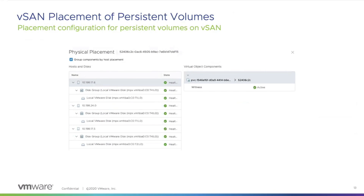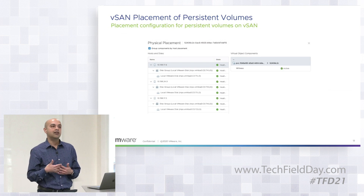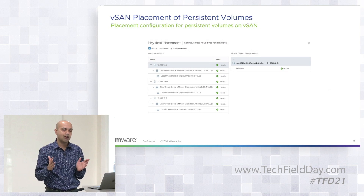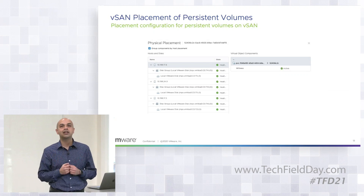Going further, if you want to see where a particular persistent volume is placed on the storage platform like vSAN, we will even show you the actual breakup of the different components and where the witness lies. You can get down to the level of the individual disk on your infrastructure to see if there is any problem with a particular component, which disk is causing problems, and so on. We have offered that end-to-end traceability for your persistent volumes on vSphere.